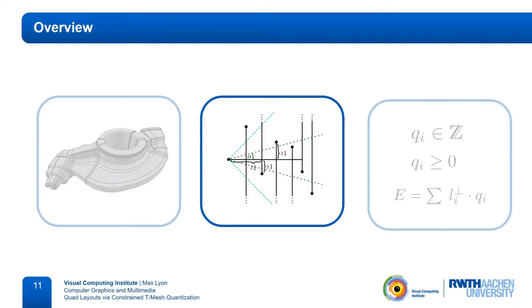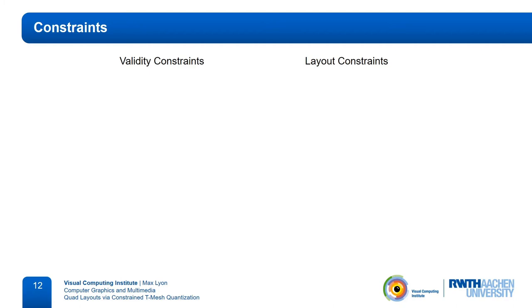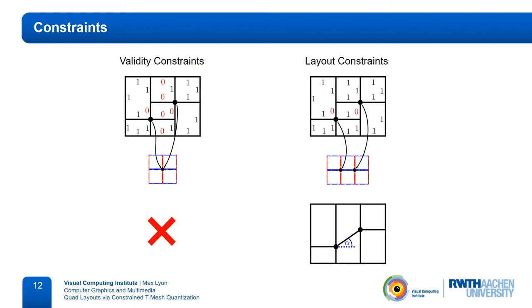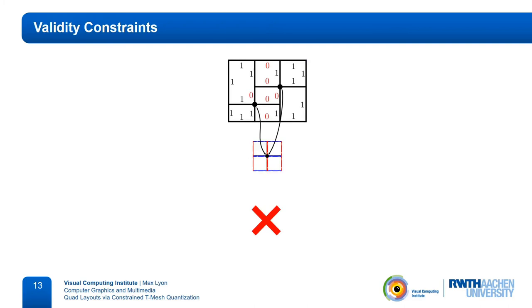Okay, now that we have a t-mesh, let's take a look at the constraints we set up. We distinguish between two types of constraints, validity constraints and layout constraints. The former guarantee that a valid result is generated, that is, they prevent layout vertices from falling onto each other. The latter guarantee that all separatrices stay within the user-given bound, so they may prevent such a layout if the deviation is too large.